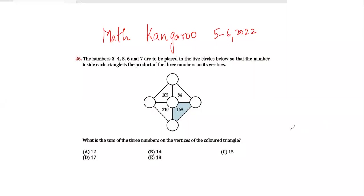Hello friends, today we will be doing Math Kangaroo level 5 and 6, year 2022, question number 26. Let's read the question. The numbers 3, 4, 5, 6, and 7 are to be placed in the five circles below so that the number inside each triangle is the product of the three numbers on its vertices.